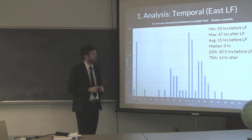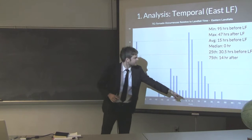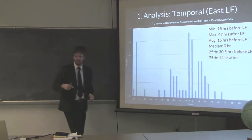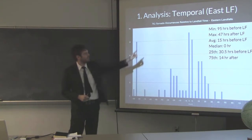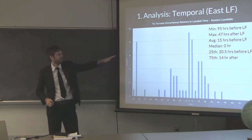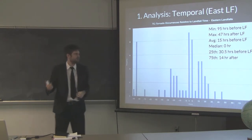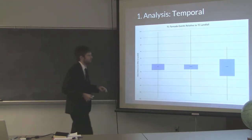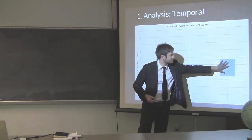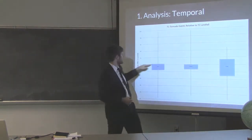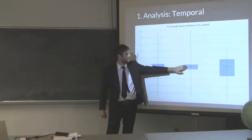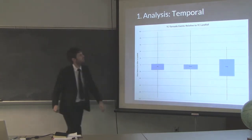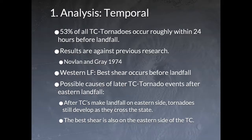For western landfalls, there's a steady increase in occurrences right up to landfall, then a quick drop-off every ten hours after. For eastern landfalls, it's a bit more chaotic — events bounce back and forth before landfall, with a high-frequency peak around four hours before to zero hour, then a slower drop-off. Notably, 53% of all TC tornadoes actually occur roughly within 24 hours before landfall, which somewhat contradicts previous research suggesting most scatter after landfall.